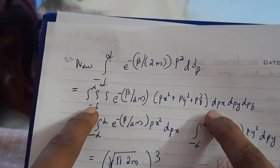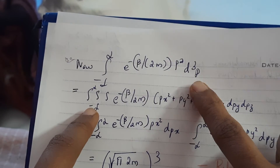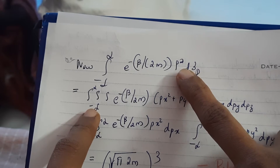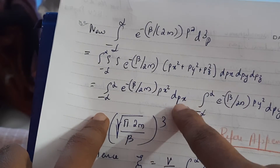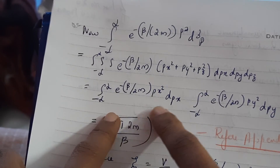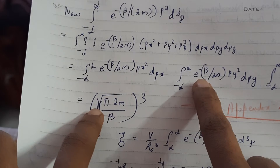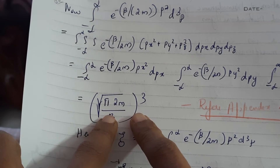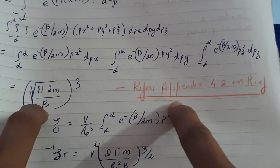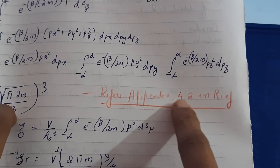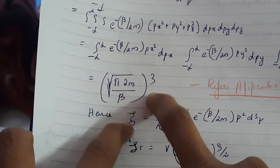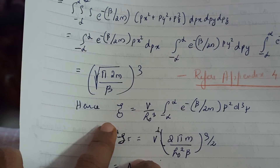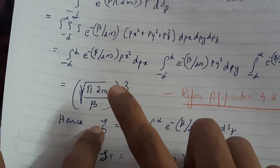Now we are going to evaluate this integral — the kinetic energy term. We write p in terms of px, py, and pz, which is why we have three integrals from minus infinity to plus infinity. Integrating for the three x, y, z coordinates gives three different integrals. This can be simplified using a standard formula. If you want to learn how to derive this, refer to appendix 4.2 in Reif. There you can understand how to evaluate this integral; otherwise, you can just memorize the result.